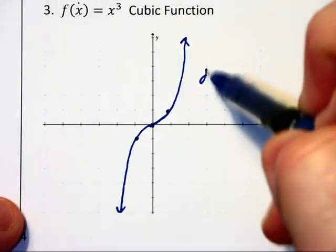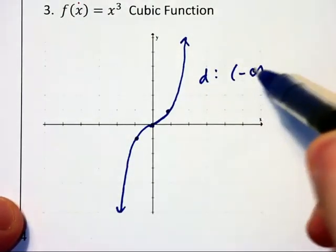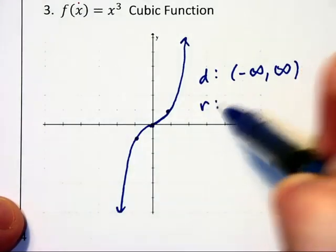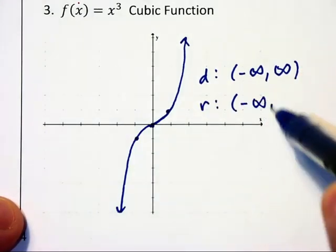The domain is all real numbers because it extends left and right forever as its going up quickly. And the range is also all real numbers.